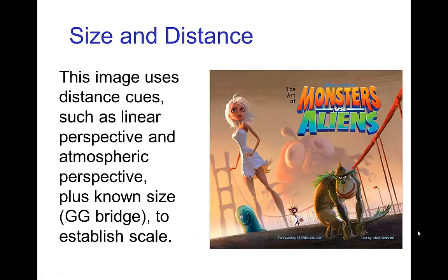Another way of establishing size is to use visual cues such as linear perspective and atmospheric perspective. We see an example of this in an image that also has an object of known size — the Golden Gate Bridge. From perspective, we have a smaller character in the foreground, and because the woman is much further back but visually much larger in size, she must be a giant. Even further back, because of the atmospheric perspective — being shrouded in fog — the big insect creature is even more gigantic.